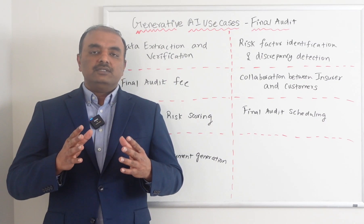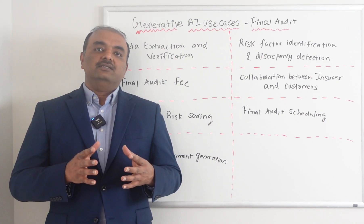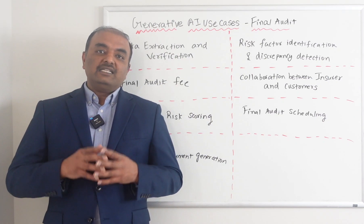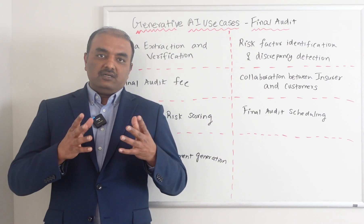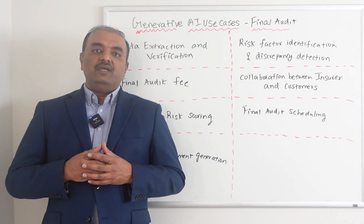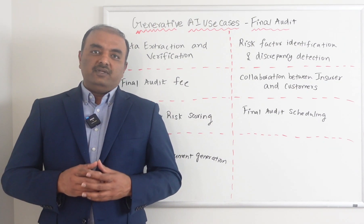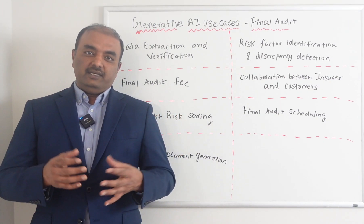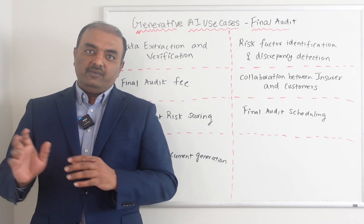Final Audit is a transaction that we use in certain lines of business like workers compensation or general liability to calculate the actual data. For example, with a workers compensation policy, when a policy is issued, we have only the estimated payroll of the employees. Say there are five software engineers with a yearly package of $300k — the employer gives the $300k salary, we enter it, and we calculate the premium.